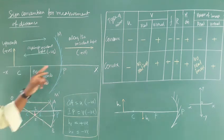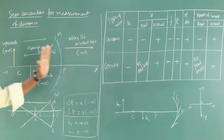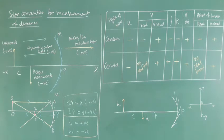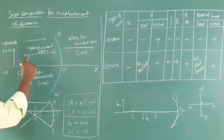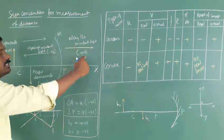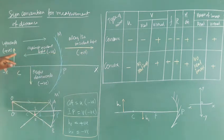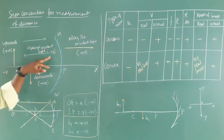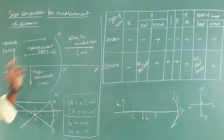The object should be placed on the left-hand side of the mirror. Distance measured along the direction of incident light is taken as positive. Distance measured against the direction of incident light — that is, opposite to the incident light — is taken as negative.